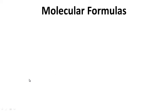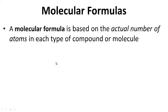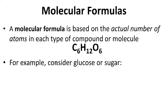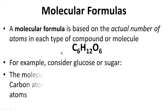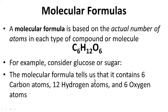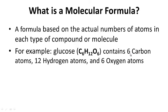Moving on to molecular formulas: a molecular formula is based on the actual numbers of atoms in each type of compound or molecule. For example, consider glucose (sugar): the molecular formula C6H12O6 tells us it has 6 carbon atoms, 12 hydrogen atoms, and 6 oxygen atoms — the actual number of atoms in it. For your notes: what is a molecular formula? Question on the left, answer on the right. Pause while you write.